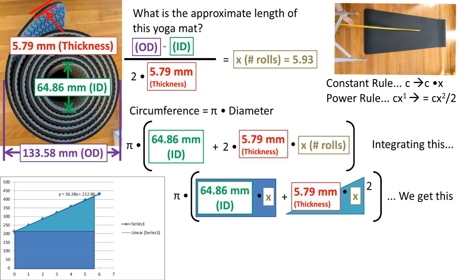Doing so, we're left with pi times the ID times x, which is the number of rolls, plus the thickness times the x number of rolls squared. Looking at the graph, we can really see that this is just an equation for a rectangle plus an equation for a triangle.